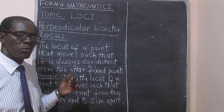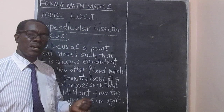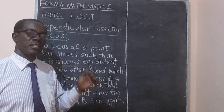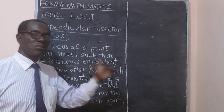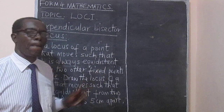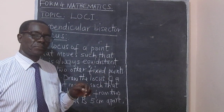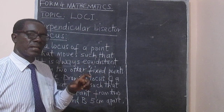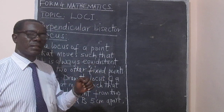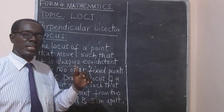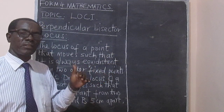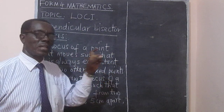In our previous lessons we looked at a point that moves in such a way that it is equidistant from another fixed point, and we got a circle. Then we looked at a point that moved in such a way that it was always equidistant from a fixed line, and in that case we got a parallel line.